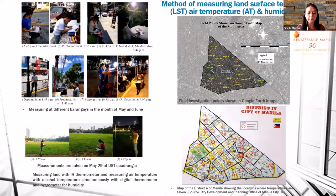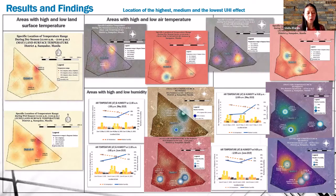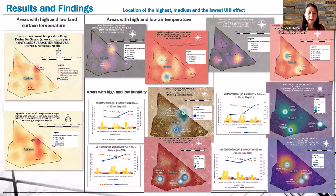The field survey was conducted at 17 station points. Results show heat maps indicating the locations of the highest, medium, and lowest land surface temperatures measured during daytime, and air temperatures measured during nighttime. Heat maps also show areas with high and low temperature during 11 AM to 2 PM for wet and dry seasons, to ascertain resident responses on urban heat experience compared to nighttime air temperature, as well as areas with high and low humidity.